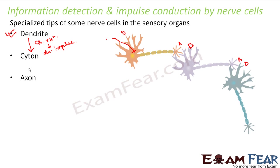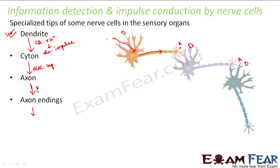From the cytone, this electrical impulse will travel to the axon. From the axon, it moves toward the axon endings. So this electrical impulse is traveling from the cytone to the axon and then to the axon endings.